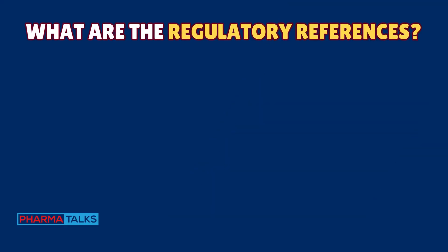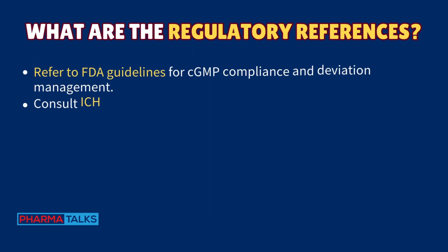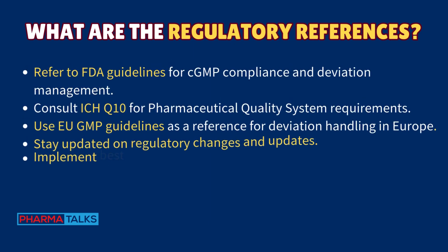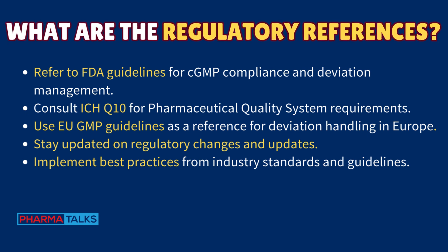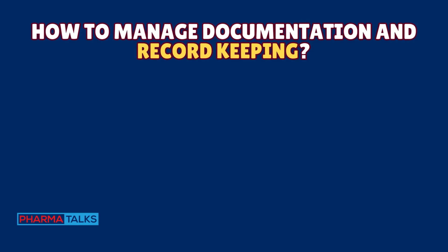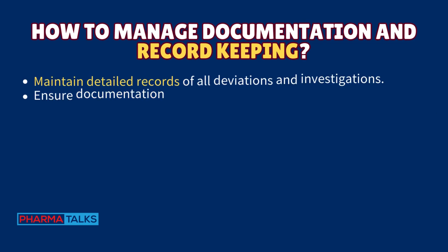Key regulatory references include FDA guidelines for cGMP compliance and deviation management. Consult ICH Q10 for pharmaceutical quality system requirements and use EU GMP guidelines as a reference for deviation handling in Europe. Stay updated on regulatory changes and implement best practices from industry standards and guidelines.